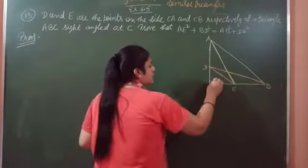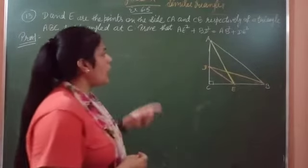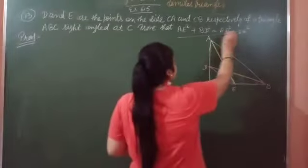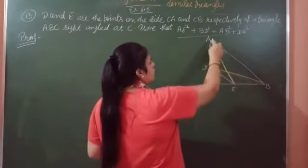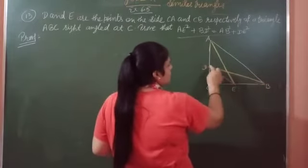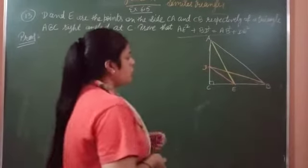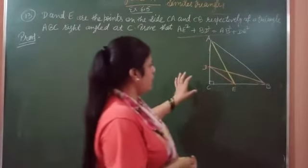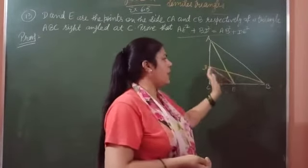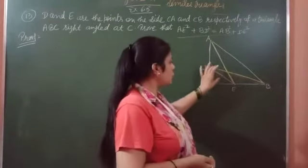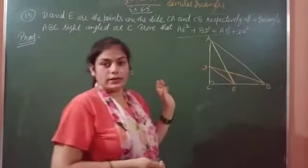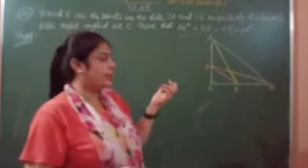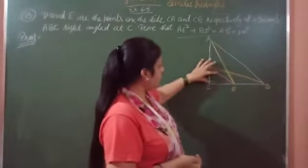Here I have triangle ABC, right angle at C. And you have to prove that AE square plus BD square is equal to AB square plus DE square. So if we observe this, what are triangles of hypotenuse? There are right triangles.